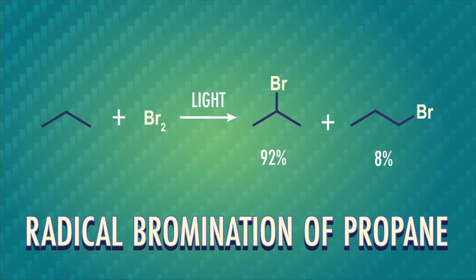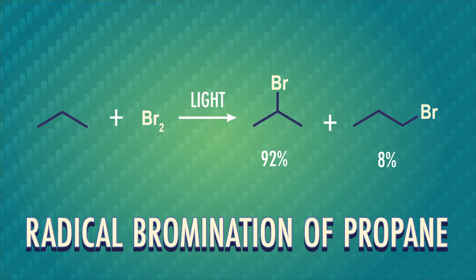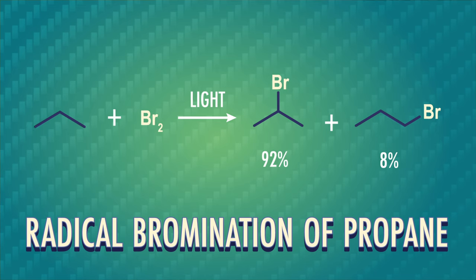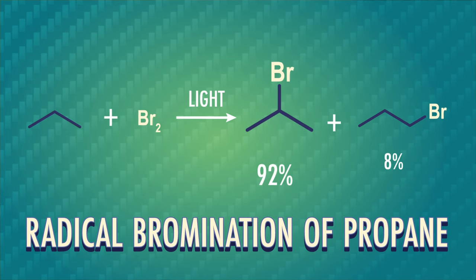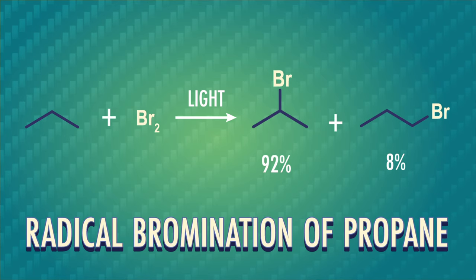So, for example, if we do radical bromination of propane, we can create a primary or secondary radical. Because the secondary radical is more stable, we get way more of the product that comes from it: two-bromopropane. But here's a weird thing.